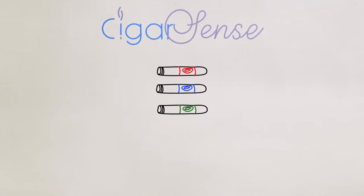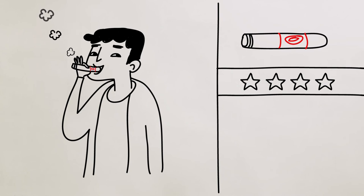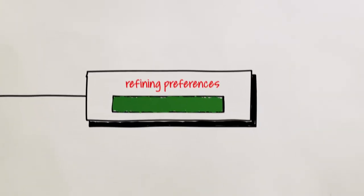Cigar Scents even helps him find where he can buy his recommended cigars, locally or online. After trying a new cigar, he can review it to help the system become more accurate in its predictions.